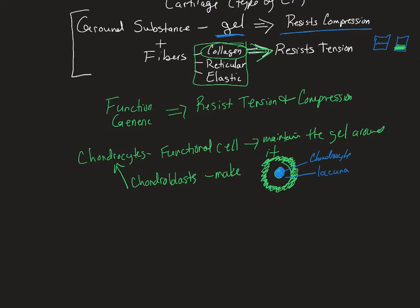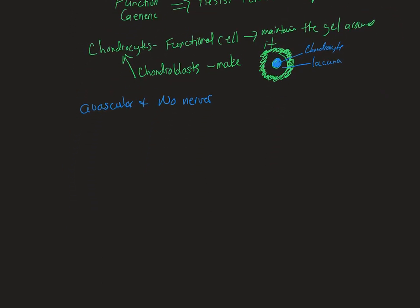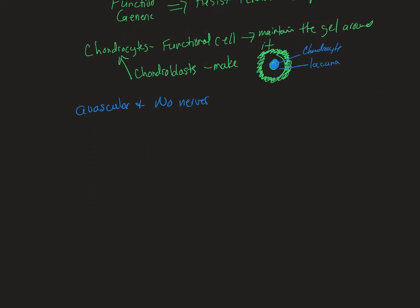Cartilage is avascular and has no nerves. So when you feel pain from torn cartilage, it's actually the tissue around it. Cartilage has three major types: hyaline, fibrocartilage, and elastic cartilage.